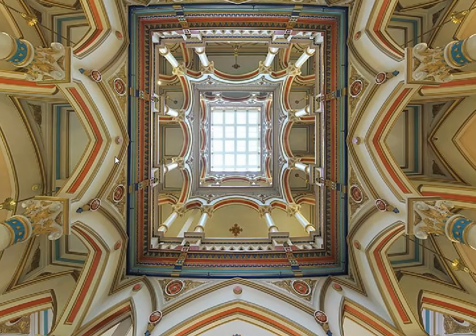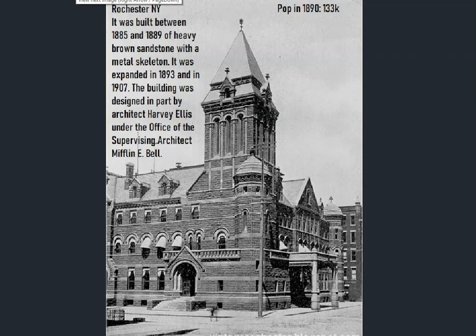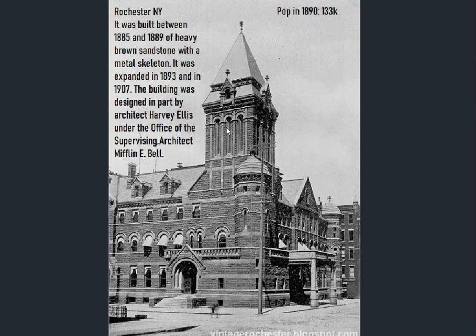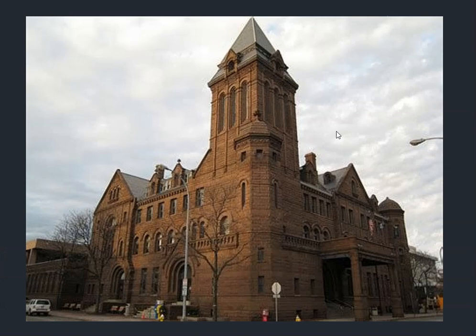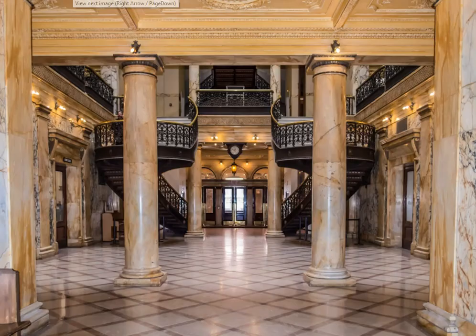Looking straight up to the atrium, symmetry is really on display — the magnificence of the old world, not to be denied. Rochester, New York — built between 1885 and 1889, heavy brown sandstone with a metal skeleton, expanded in 1883 and 1907, designed by Harvey Ellis. Population in 1890: 133,000. Still stands to this day, standing strong, with a polished interior that looks like marble.